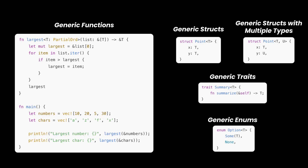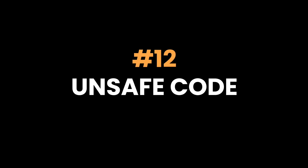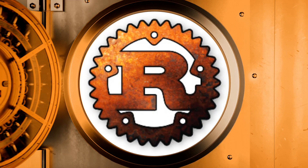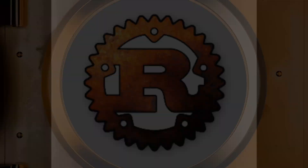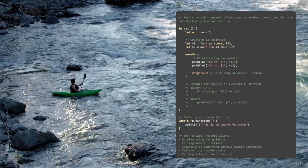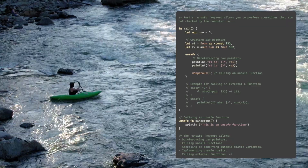Eleven: generics and the type system. Rust's generics system allows you to write highly reusable and type-safe code. Combined with trait bounds, generics let you define flexible functions and structures while maintaining strict type safety.